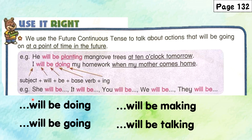Let's look at how to write the future continuous tense. The structure is: subject + will be + verb with -ing. Examples: she will be, it will be, you will be, we will be, they will be — followed by the verb with -ing: will be doing, will be going, will be making, will be talking.